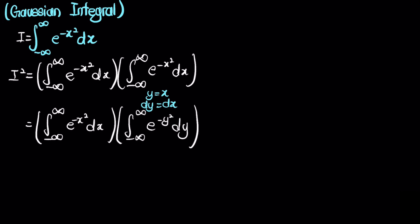Now, looking at these two integrals, we can smash them into one double integral: the integral from negative infinity to infinity, and also negative infinity to infinity, with the two integrands combined as e to the negative of x squared plus y squared, dx dy.